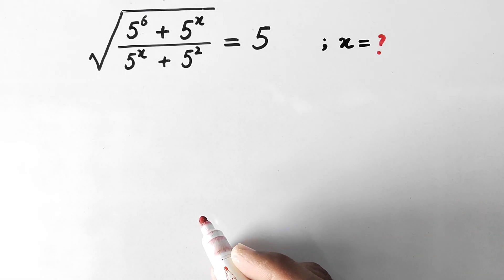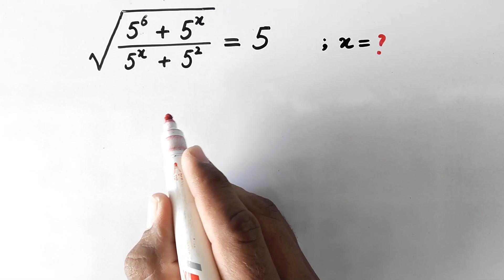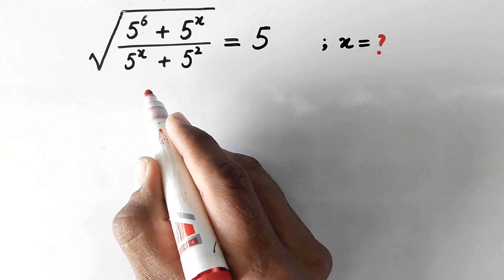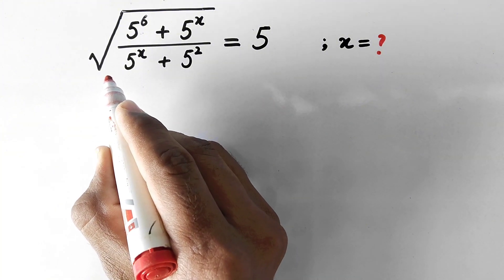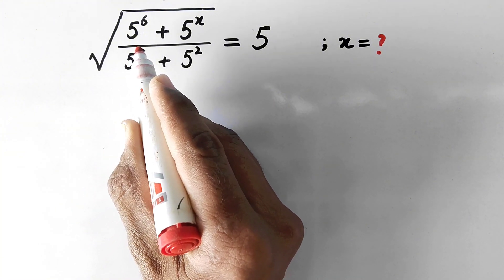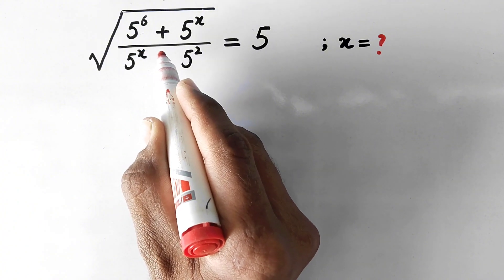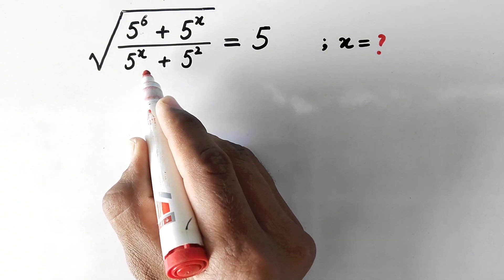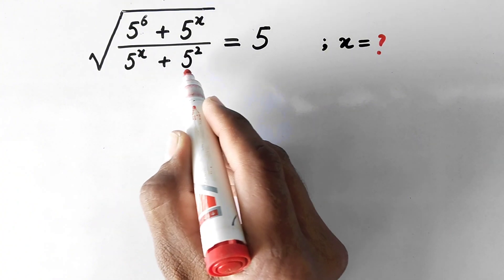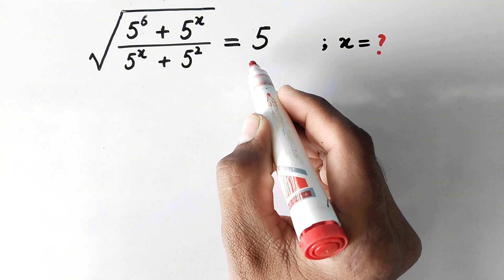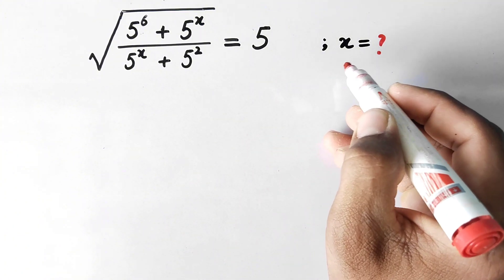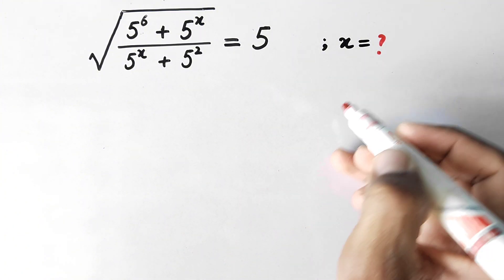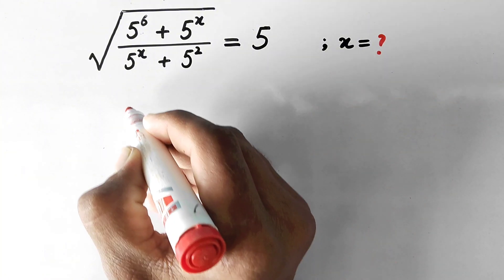Hello everyone and welcome to Explore Maths. In this video we are going to solve a very interesting radical problem: the square root of (5 to power 6 plus 5 to power x) divided by (5 to power x plus 5 to power 2) is equal to 5, and we have to find the value of x. So let us see its solution.